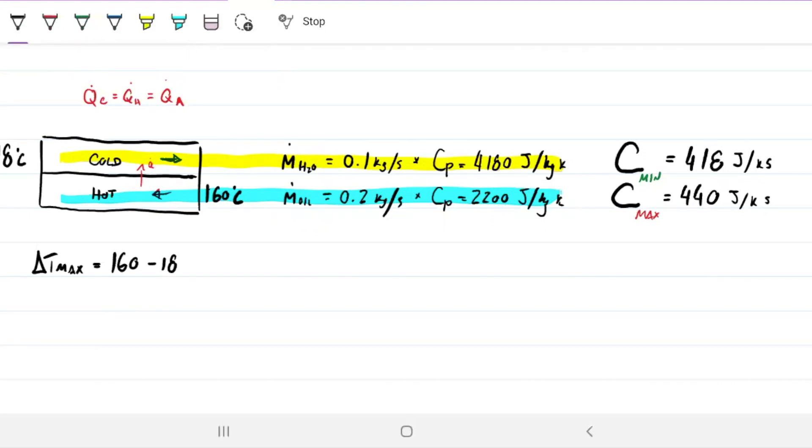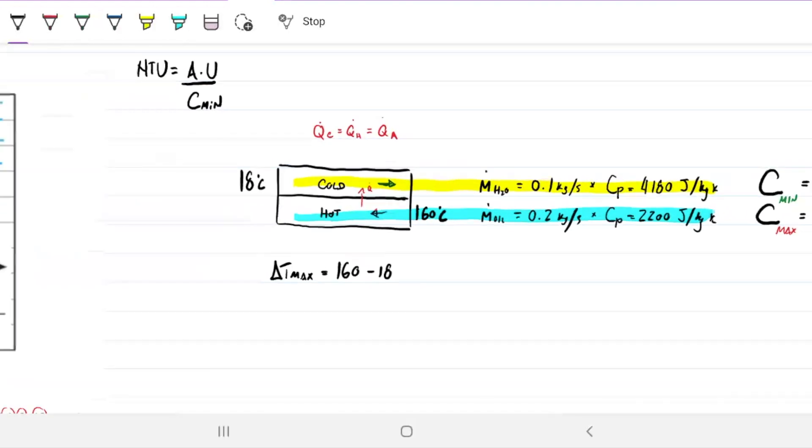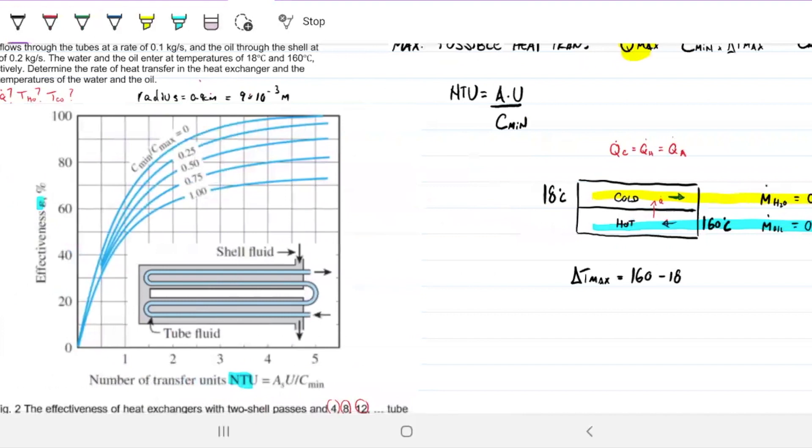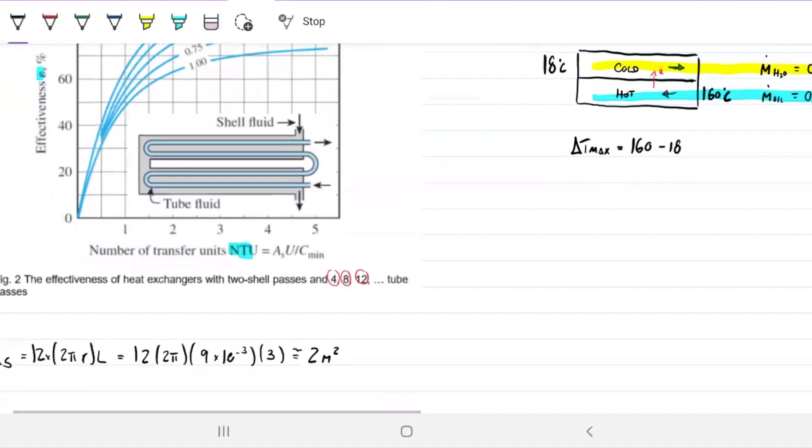What do we need to be able to find Q? What's our game plan now that we lay down all this information? The NTU is surface area overall heat transfer coefficient over C min. This guy is just a ratio between the two. But this guy, we know, is a ratio between the actual energy being exchanged and the maximum one. So I can use that to my advantage.